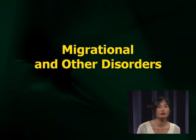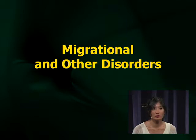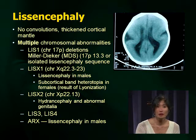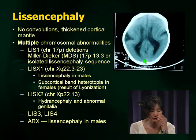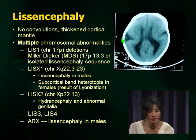Moving on to migrational disorders — these represent a smaller proportion of your examination, but don't ignore them; you may get pictures. Lissencephaly is not very common but examiners love to show pictures of it because the pictures are striking. Recall from embryology: as the brain develops, convolutions form and increase surface area. In kids with lissencephaly, there are no convolutions — a completely smooth brain — leading to developmental delay and seizures due to lack of surface area and abnormal cortex.